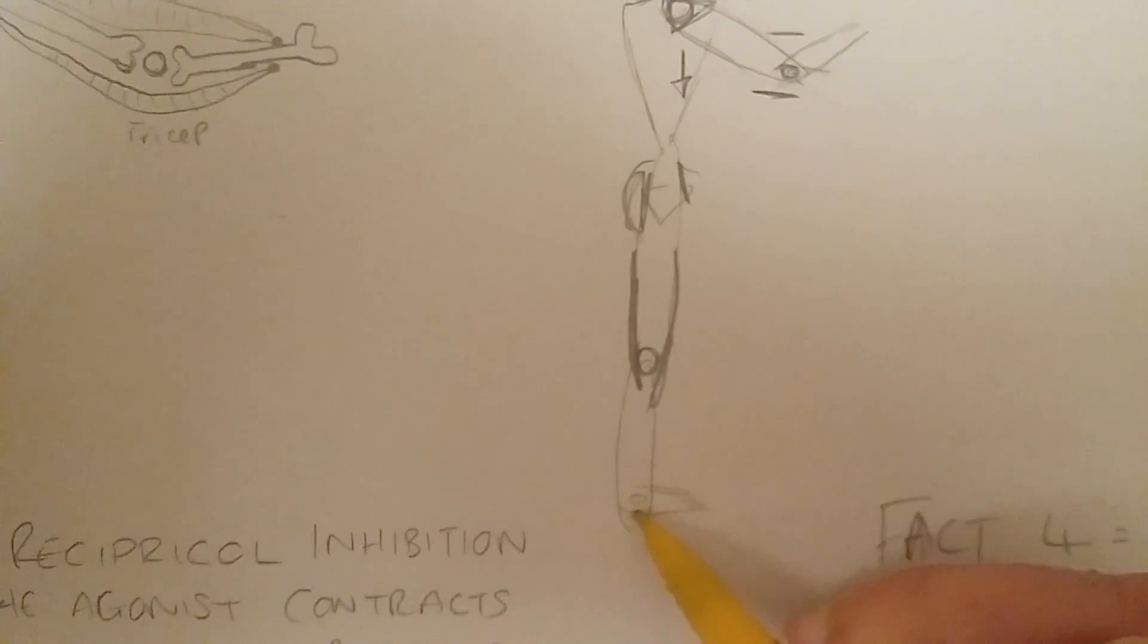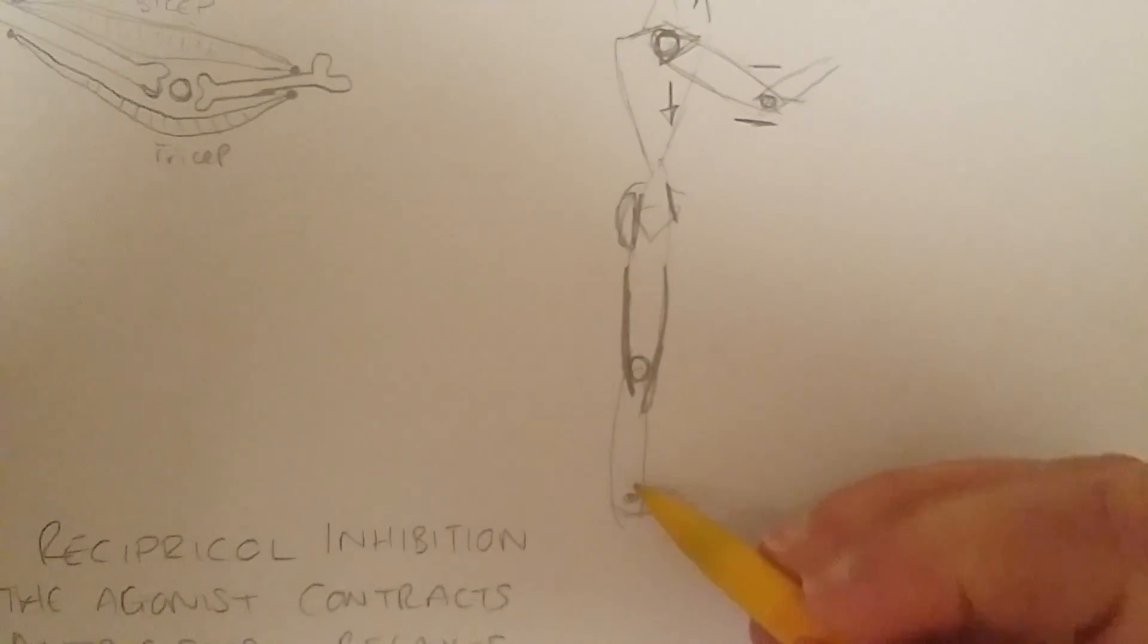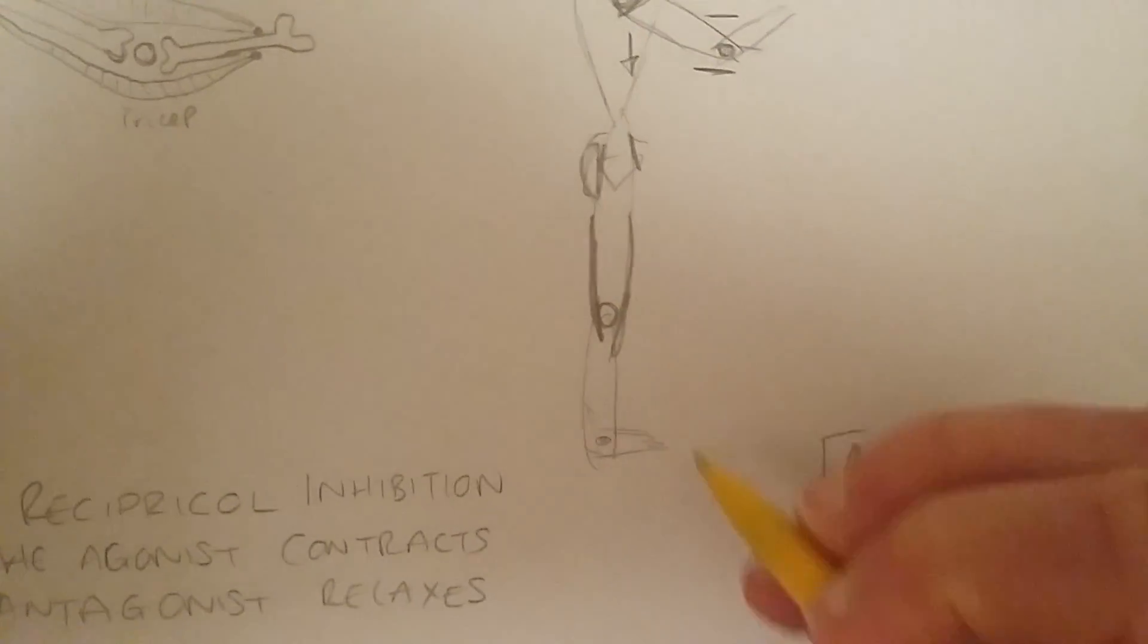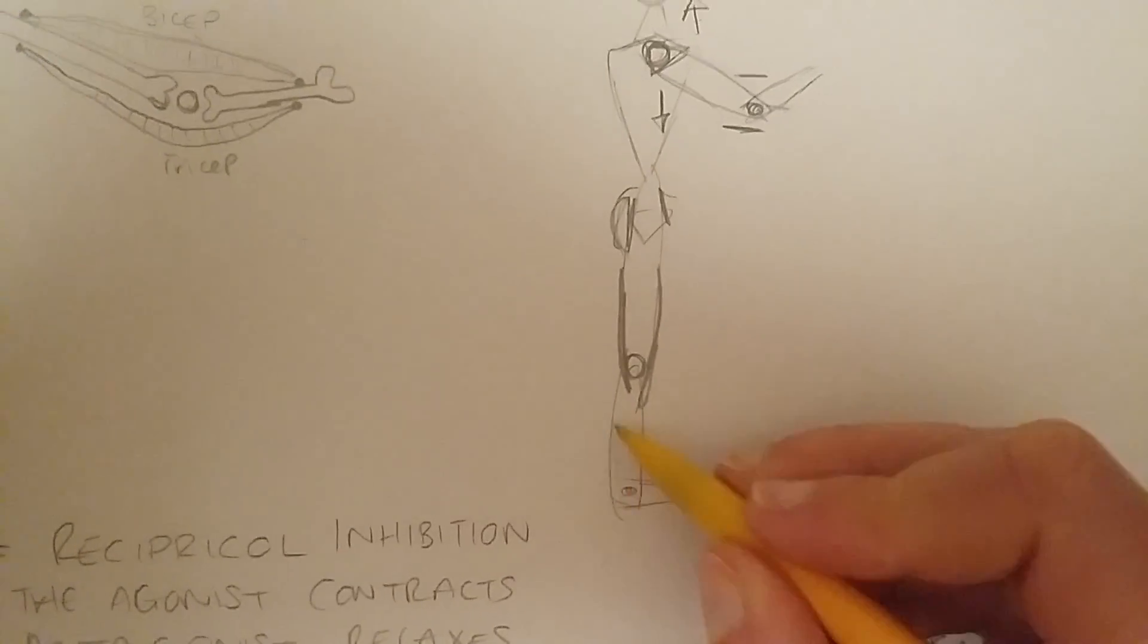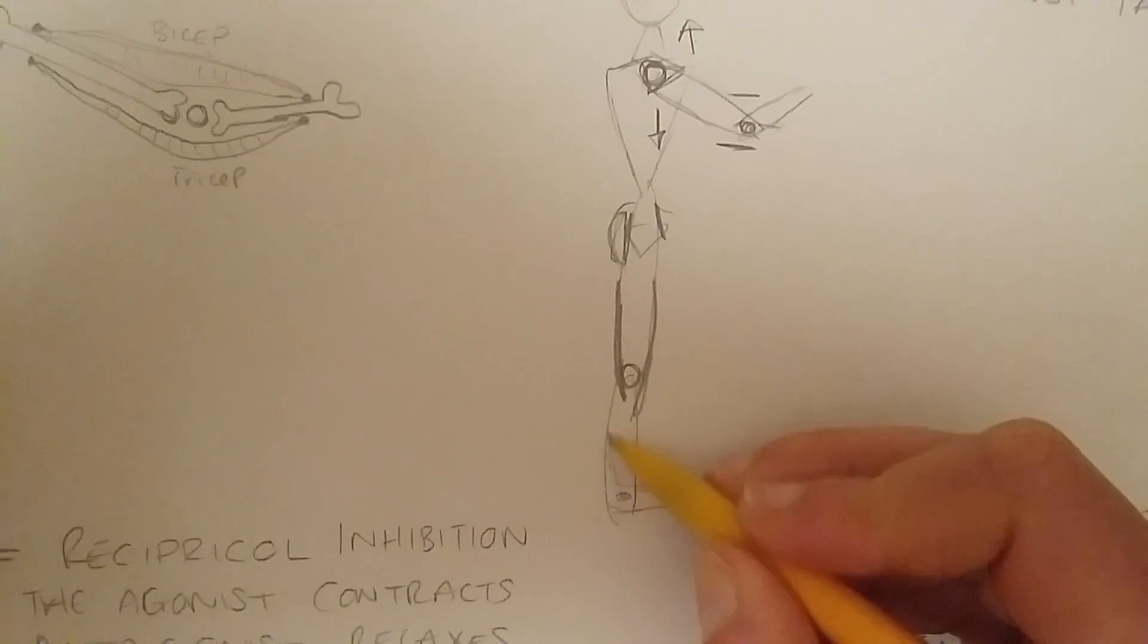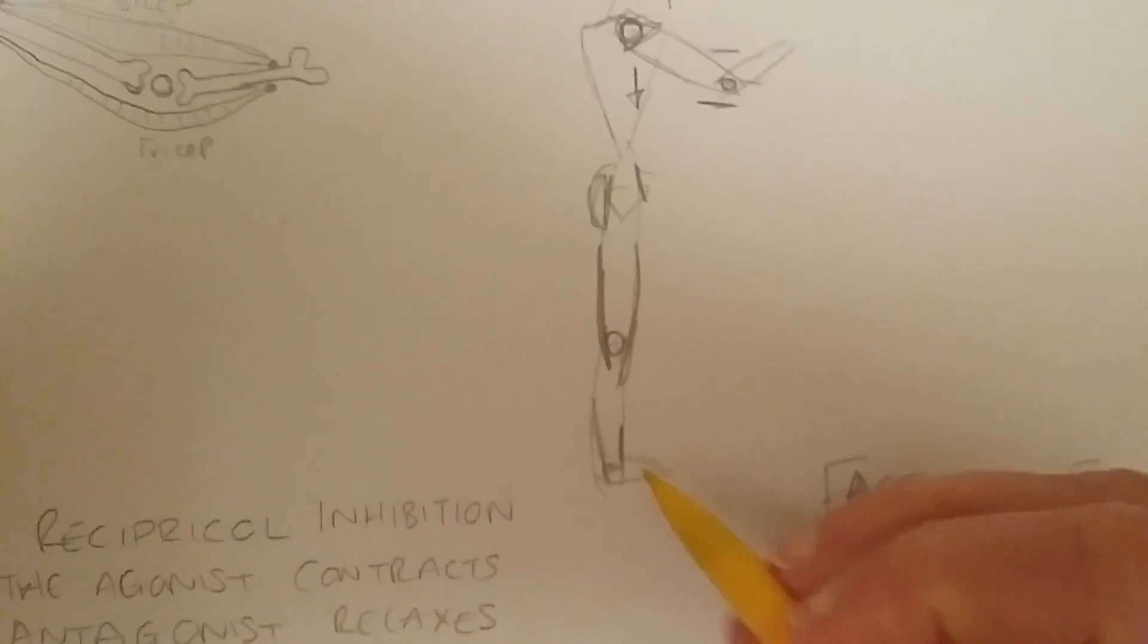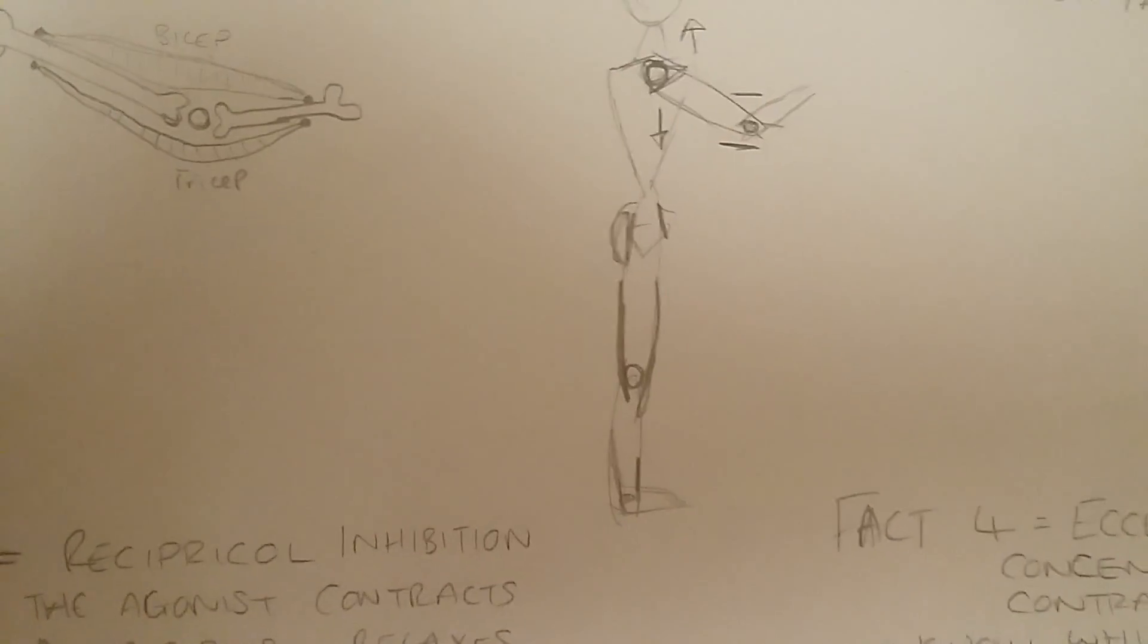And then right down here on your ankle as well, you've obviously got a lot of smaller muscles, which you actually don't need to know in detail for level two. But you've got your soleus and your gastrocnemius on one side and your tibialis anterior on the other side. And they help move your foot through plantar flexion and dorsiflexion. So they're probably the main ones that you need to know.